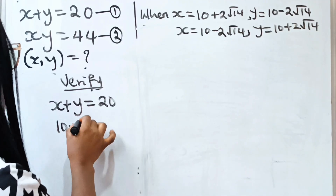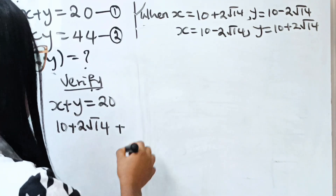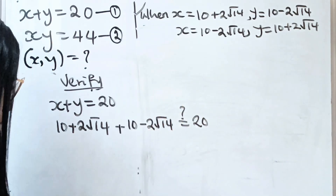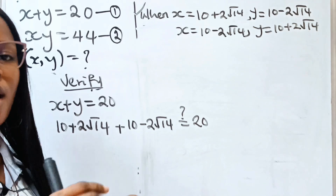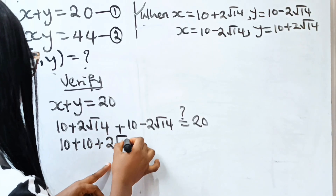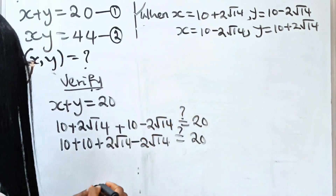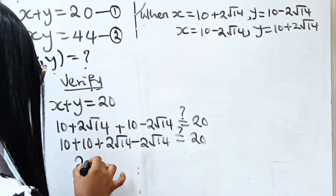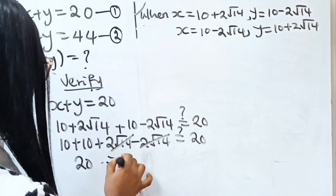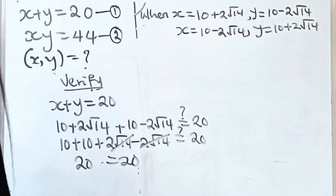So our x is 10 plus 2 root 14, plus our y which is 10 minus 2 root 14. Grouping like terms: 10 plus 10, plus 2 root 14 minus 2 root 14. That gives 20 plus 0, which equals 20. So you can see that 20 equals 20 — that proves the answer satisfies the first equation.